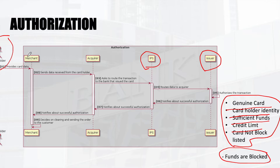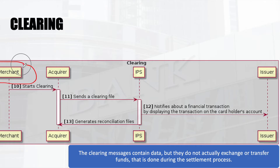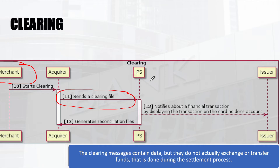The next step after authorization is not an immediate payment to the merchant — it happens in batches. The next step is clearing, which is a precursor to settlement. Settlement is where the final funds go to the merchant, but before settlement there is a clearing process where the parties agree on how much has to be settled. The merchant initiates this; the acquirer sends a clearing file with all transaction details, and the IPS notifies the financial transaction information to the issuer. The clearing messages contain only data — no money transfer is happening yet.